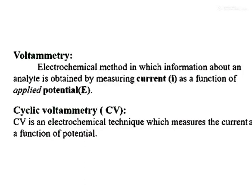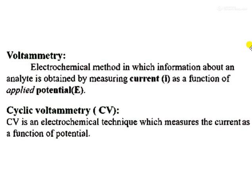Voltammetry is an electrochemical method where we measure current as a function of applied potential. That means measuring current with change in potential. If you change the potential, current is not constant in certain environments, and that is the study. The reason behind the changing current is some redox reaction within that environment which causes the change in potential.